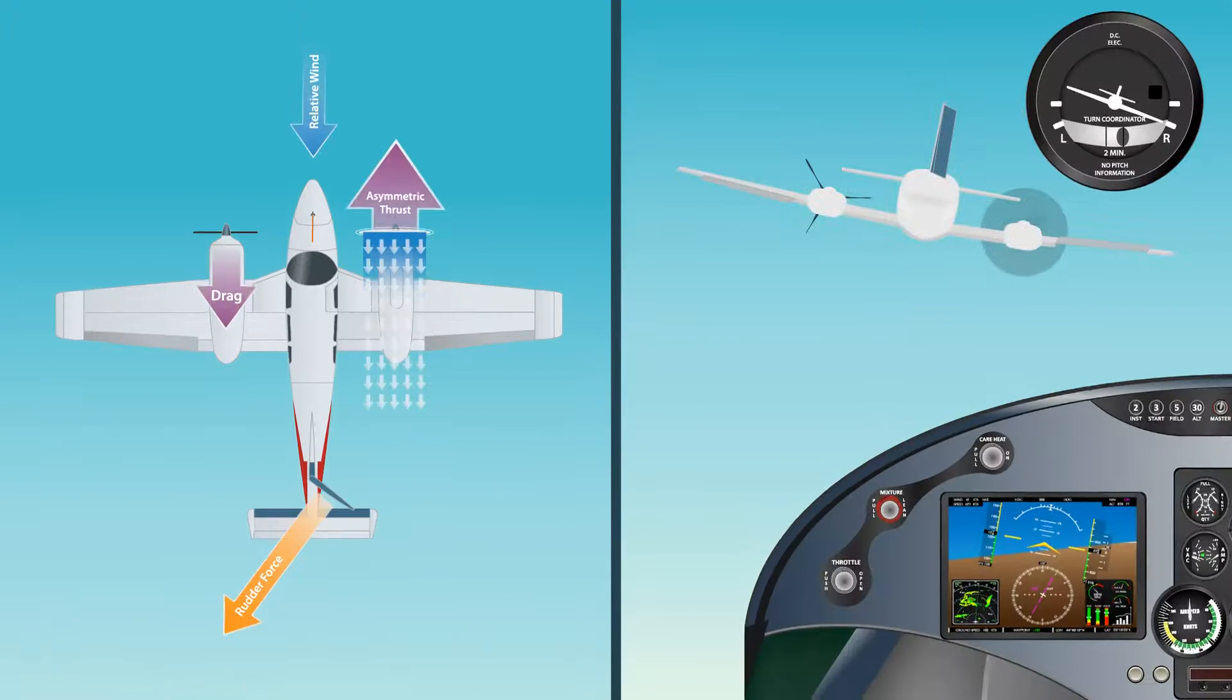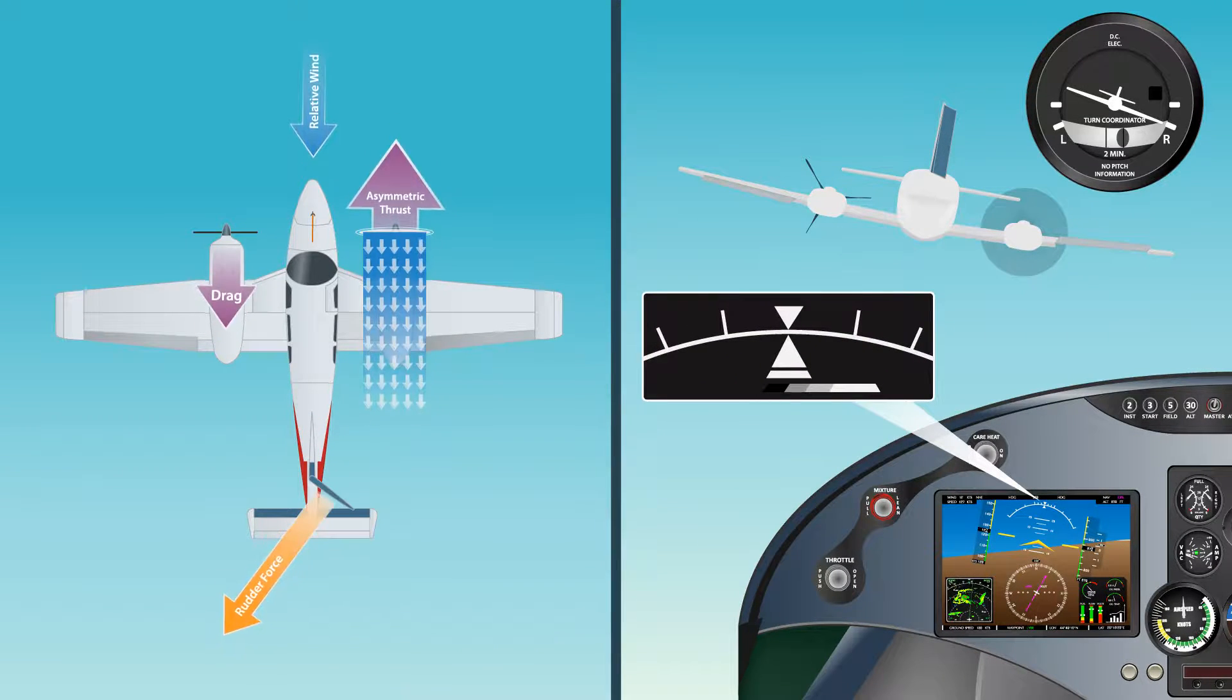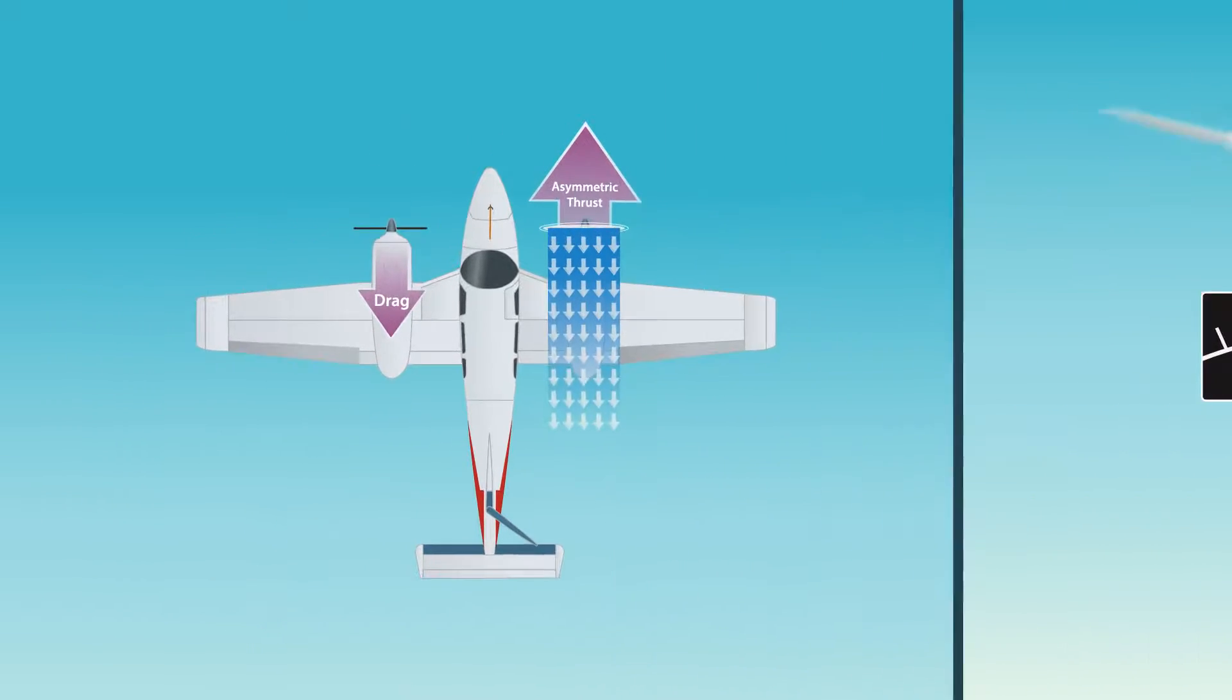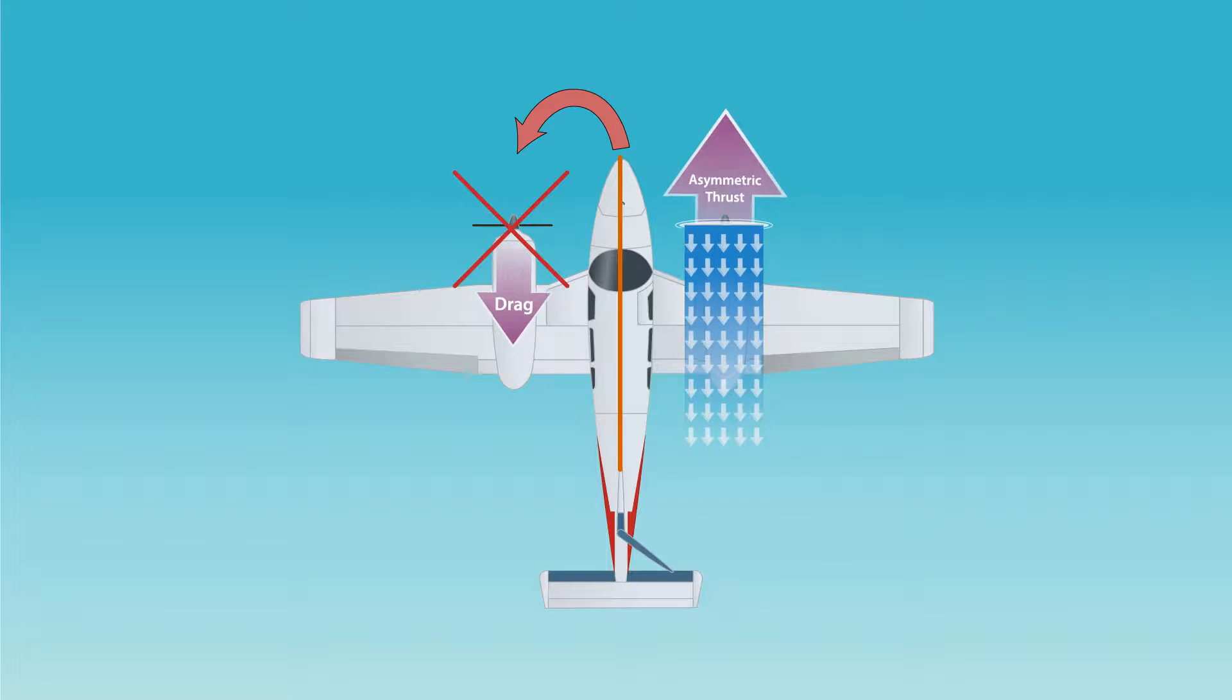The condition of zero sideslip when it comes to bank angle and ball position may vary slightly from model to model and with available power and airspeed. If the airplane is not equipped with counter-rotating propellers, it also varies slightly with the engine failed due to P-factor.